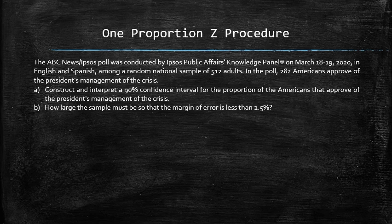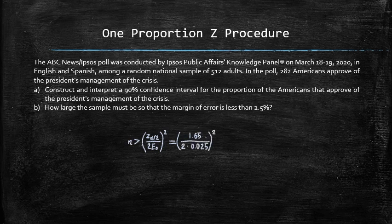To answer the question in part B, we will use the formula. N is greater than the square of Z alpha over 2 divided by 2 times the desired margin of error. In which we can plug in all the values to get 1089, which must be rounded up to 1090 to guarantee the accuracy.